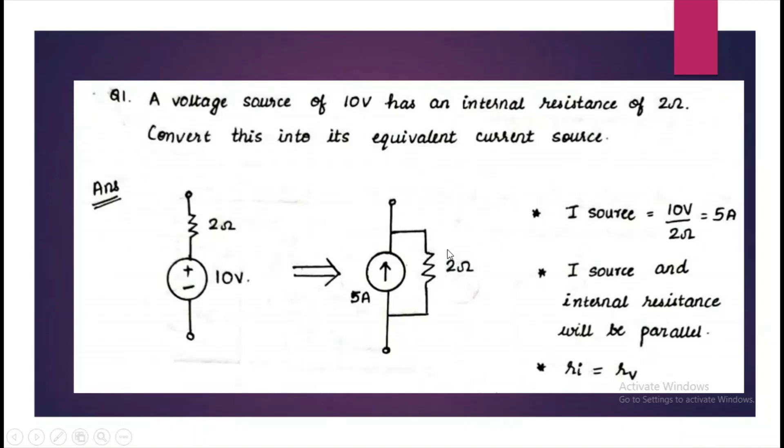What we studied in the previous derivation is that the internal resistance have to be same for equivalent voltage and current source. So it has to be both 2 Ohm and since it is a current source, we have to place it in parallel. For voltage source, it is in series. For current source, it will be in parallel. This is the final equivalent circuit.